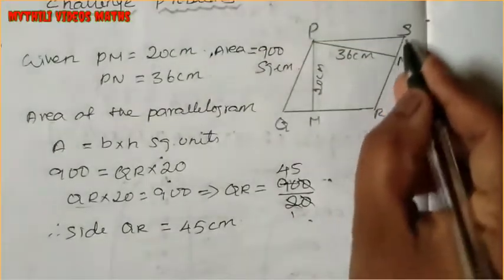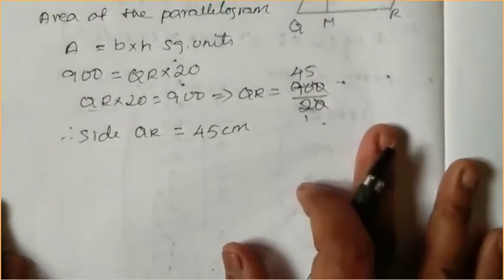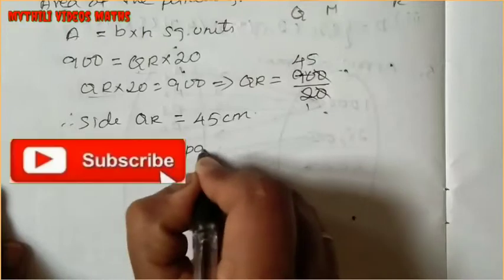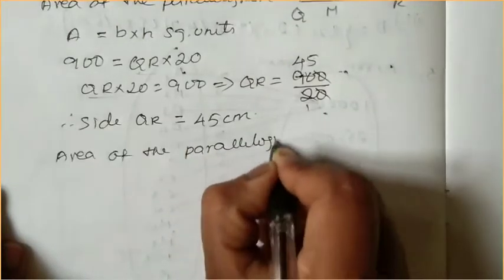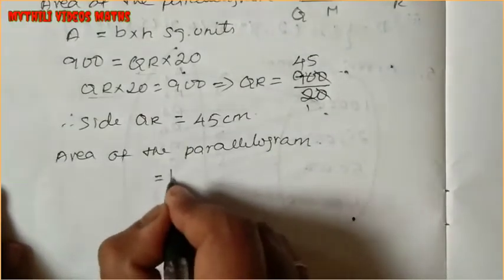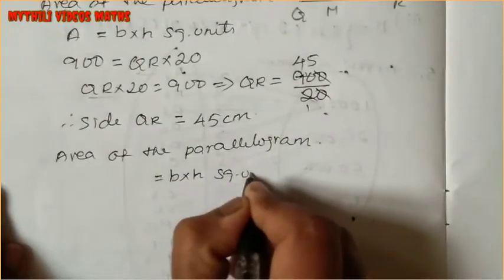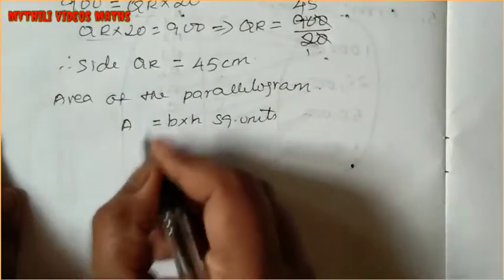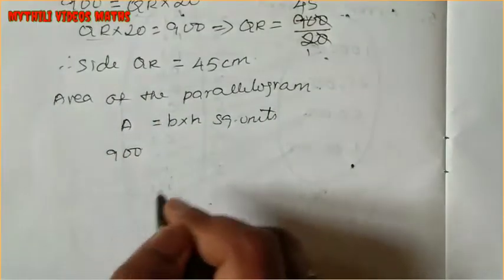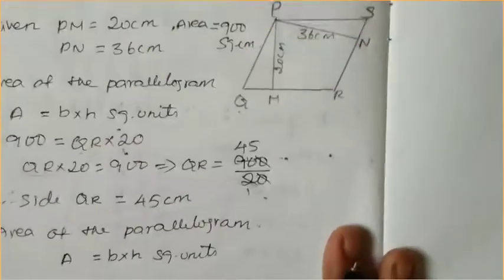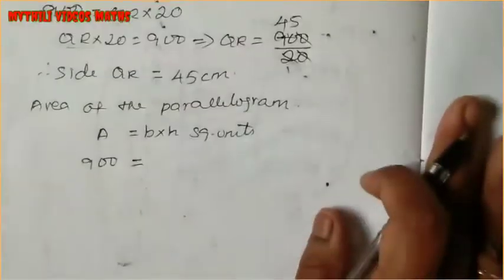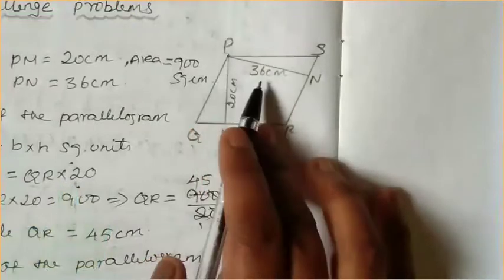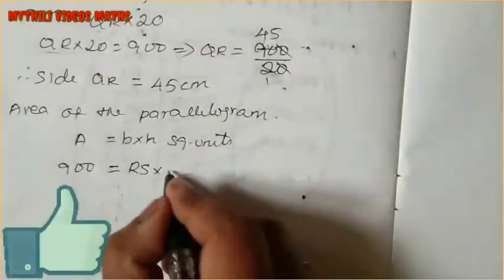Now we have to find the RS side. Again writing the formula: area of the parallelogram equals base into height square units. Same area value 900 equals base RS into height. The height corresponding to RS is PN which is 36 cm.